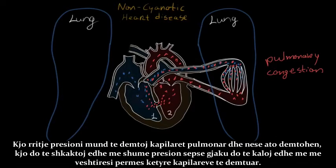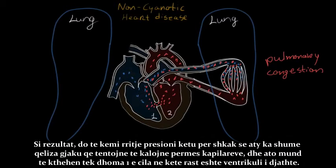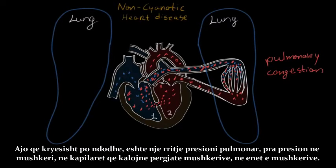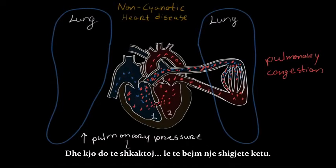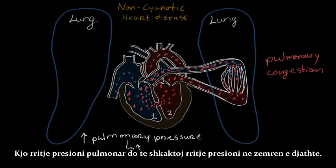If you cause damage to the pulmonary capillaries, that's gonna cause even more pressure, because it's harder to get the blood through these damaged capillaries. You're gonna have increased pressure because there are so many blood cells trying to get through. And that can feed back to room one, which in this case is your right ventricle. So we have an increase in pulmonary pressure — that's basically the pressure in the capillaries throughout the lungs, the blood vessels in the lungs — and that increase in pulmonary pressure is gonna cause an increase in the pressure in the right heart.